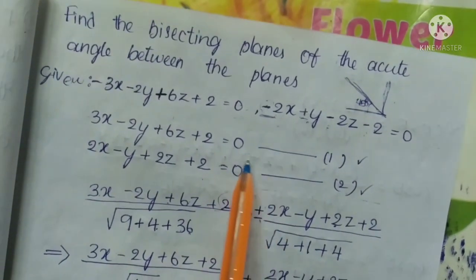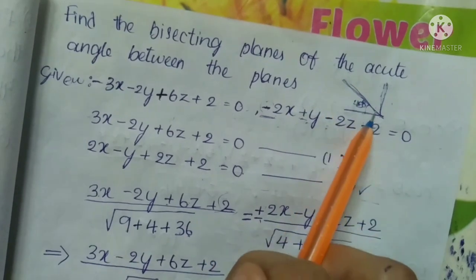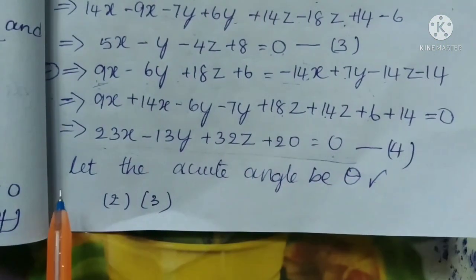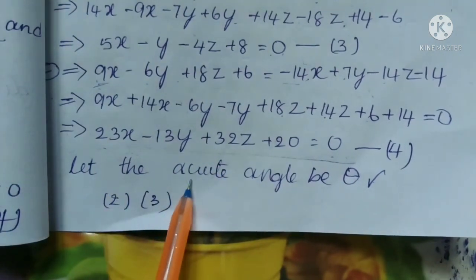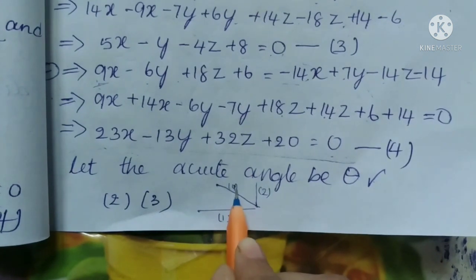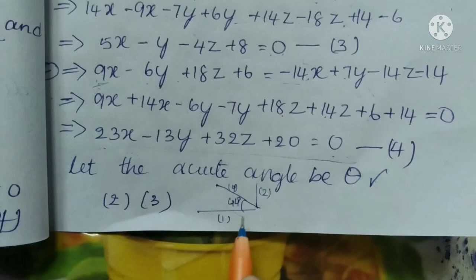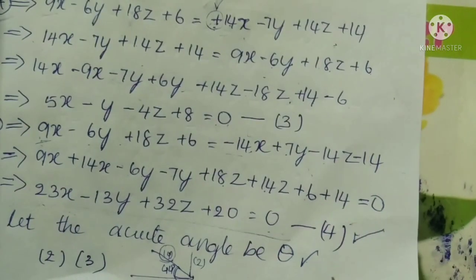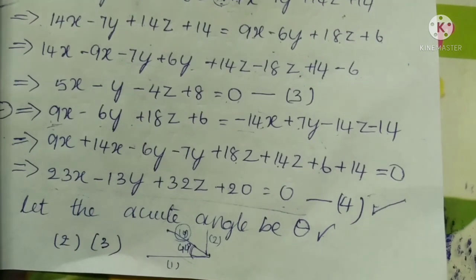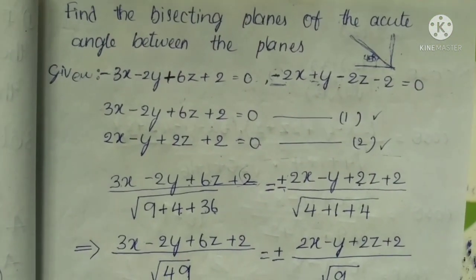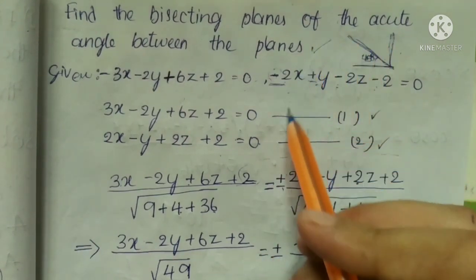So this is the answer. 23x minus 13y plus 32z plus 20 equals 0 represents the plane bisecting the acute angle. I hope you find it useful. In the next video I will explain important question number 3 with a detailed solution. First question video link is in the description. Thank you.